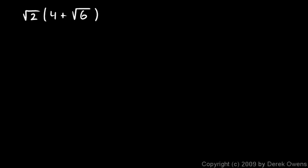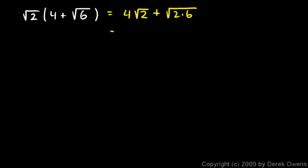Sometimes simplifying an expression involves distributing, and when we have radicals involved, we still distribute as we normally would. In this one we have the square root of 2 times 4 plus the square root of 6, so we have to distribute. The square root of 2 gets multiplied by 4, giving 4 times the square root of 2, plus the square root of 2 multiplied by the square root of 6, giving the square root of 12.